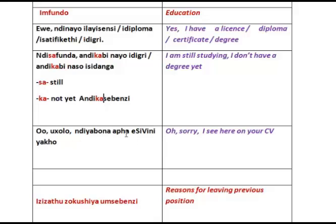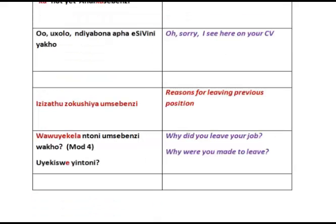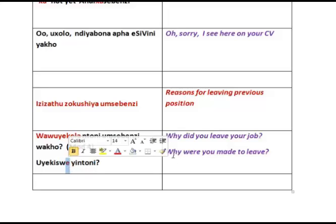I have seen all of that on your CV. Then we move on to the reasons for leaving the job. 'Wa wo yeka' — only that 'wa' — why did you leave your position? Again, this is the other form of the past tense, which will be explained in module 4. Another way of asking the same question: 'o yekiswe yindoni?' — 'yekisa' is to leave or to stop, but 'yekiswa' is to be made to leave, and 'yekiswe' is simply past tense: why were you made to leave?